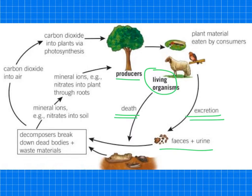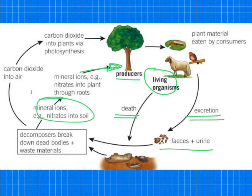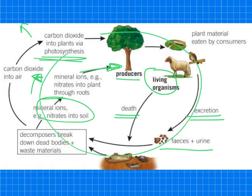The first things will be detritivores to start breaking down the material smaller and smaller. And then you'll get the decomposers — the fungi and the bacteria — that will decompose under the right conditions with moisture, good temperature and oxygen. Those will then release two things: they'll release mineral ions such as nitrates that can be used by plants for healthy growth, and they will release carbon dioxide because they're respiring into the air. Some of that will either go into the atmosphere or it will be used by plants via photosynthesis.